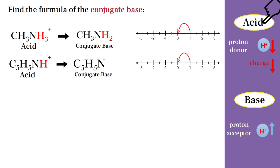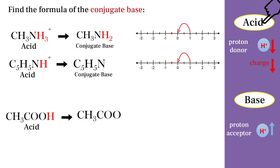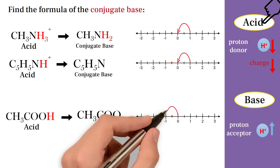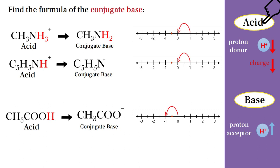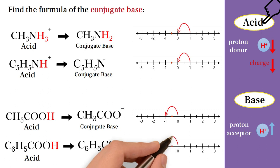As for carboxylic acids, as mentioned in previous videos, the hydrogen atom that will be ionized is from the OH group. For example, CH3COOH is an acid, so it is a proton donor and becomes CH3COO⁻. As we can see on the line number, it will acquire one negative charge. Another example of carboxylic acid follows the same steps.